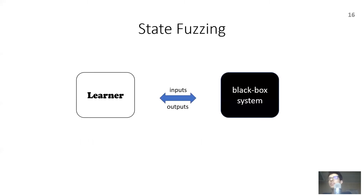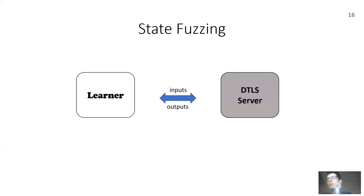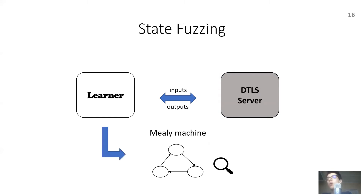State fuzzing involves two components: a learner component implementing some learning algorithm, and a black box system — the system we want to test, which in our case is a DTLS server implementation. The learner interacts with the system, sending inputs and observing the outputs the system generates in response. Eventually, the learner constructs a model, typically a mealy machine, which is consistent with the input-output behavior of the system. We can then check this model for bugs.